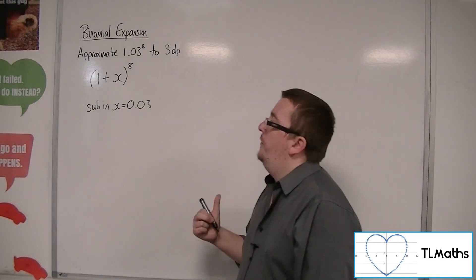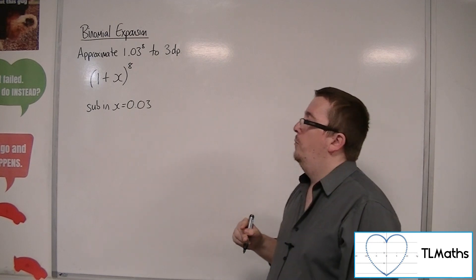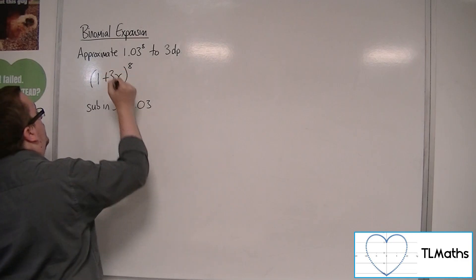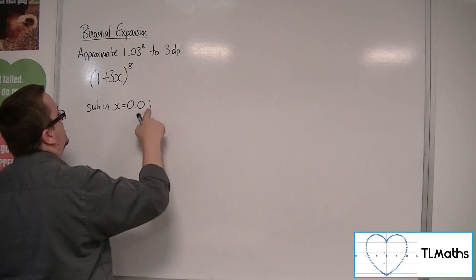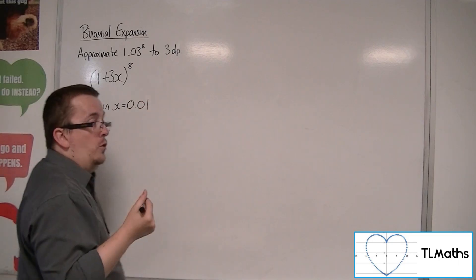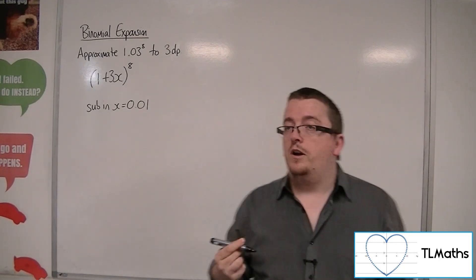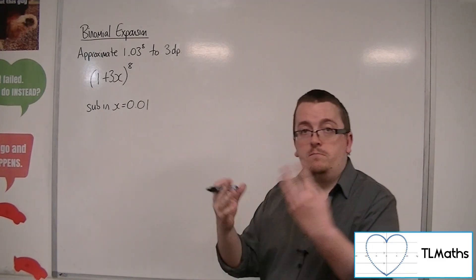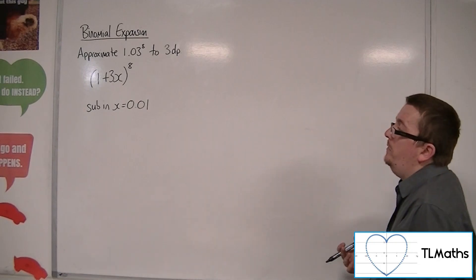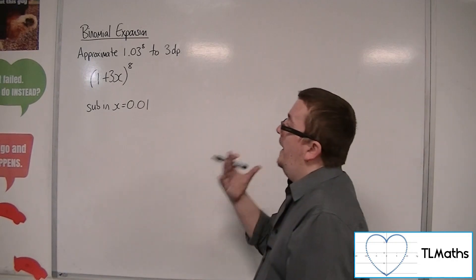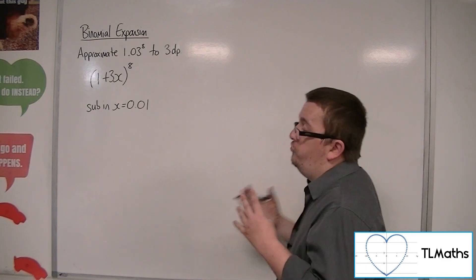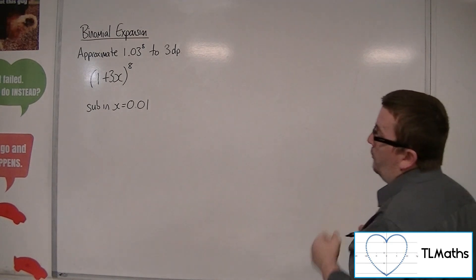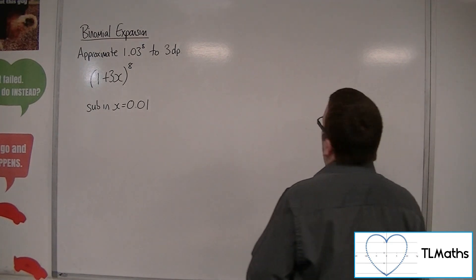Now, if I didn't want to have to substitute in 0.03, I could change it a little. I could work out 1 plus 3x to the 8, and then substitute in 0.01. And that might be a little bit easier to work with, because then I've got something that I can multiply quite easily. Right, so how am I going to do this? Well, I'm going to try and do this without a calculator. Okay, 1.03 to the power of 8, to 3 decimal places.